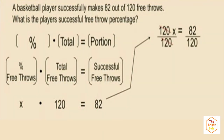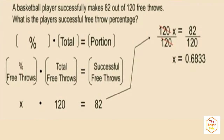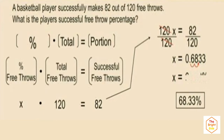To solve for x, we divide both sides by 120. 82 divided by 120 rounded to the nearest ten-thousandths is 0.6833. Now remember, x represents a percent, so our answer has to be a percent, not a decimal. We convert that decimal to a percent by moving the decimal two places to the right. Our final answer is 68.33 percent.